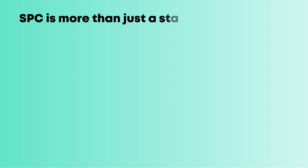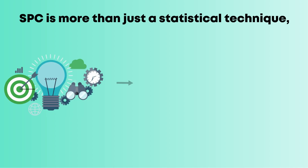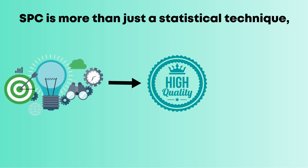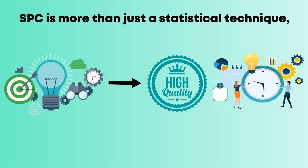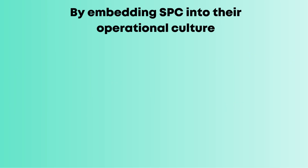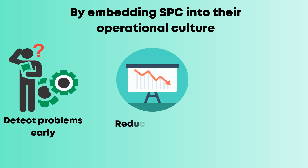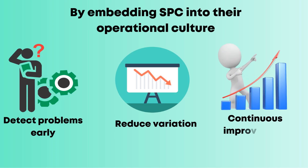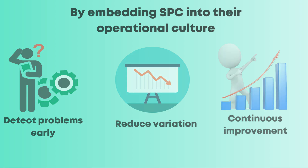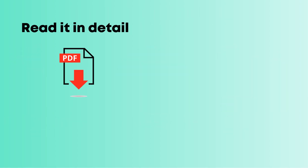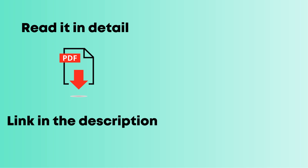SPC is more than just a statistical technique — it's a strategic approach to achieving superior quality and efficiency. By embedding SPC into their operational culture, organizations can detect problems early, reduce variation, and drive continuous improvement. If you want to read it in detail or download the PDF, go through the link in the description, and don't forget to subscribe to Education Leaves.